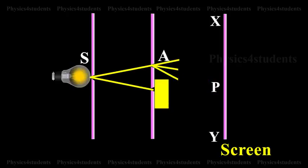When one of the slits is covered, the fringes disappear and there is uniform illumination on the screen. This shows clearly that the bands are due to interference.